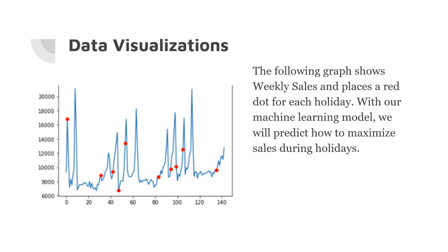Data visualizations. The following graph shows weekly sales and places a red dot for each holiday. With our machine learning model, we will predict how to maximize sales during holidays. As shown here, we see some drops in revenue and weekly sales wherever there is a markdown. The goal of our current model is to make sure that these markdowns are associated with peaks in sales and not dips in sales.